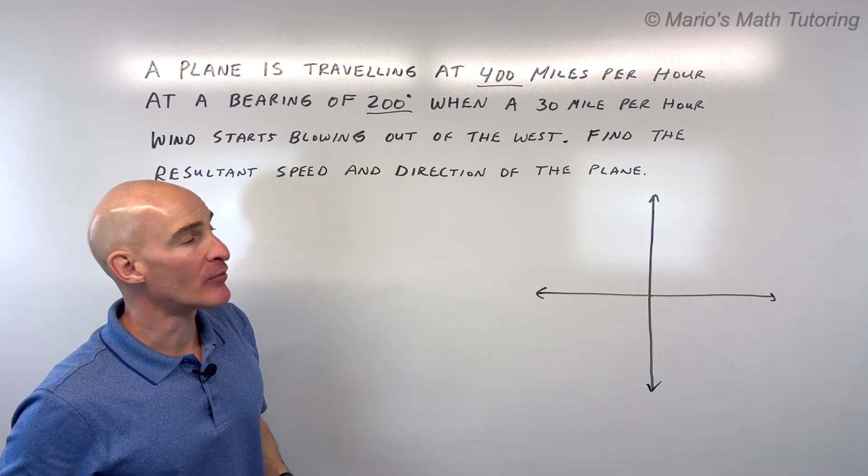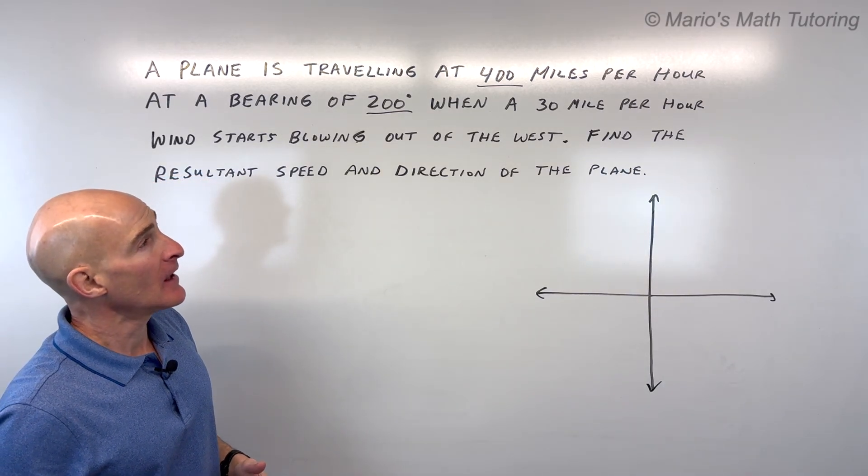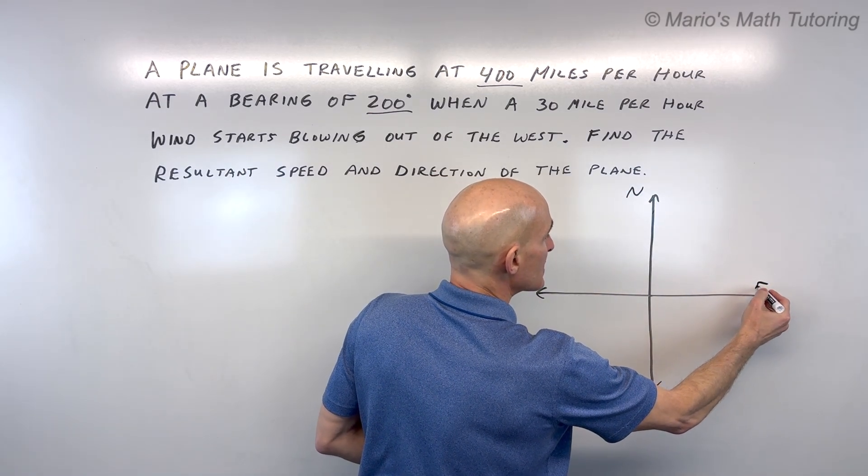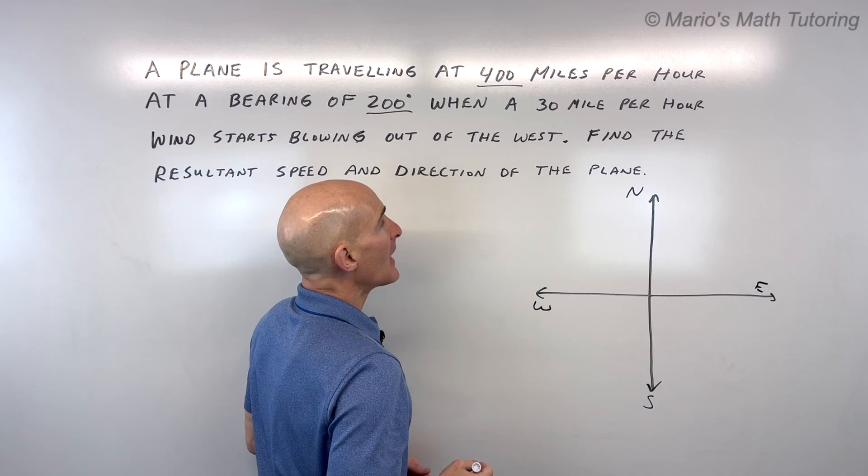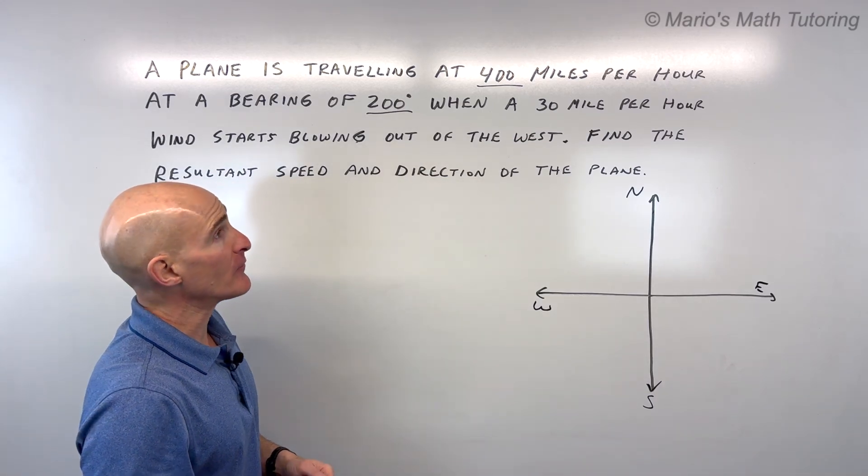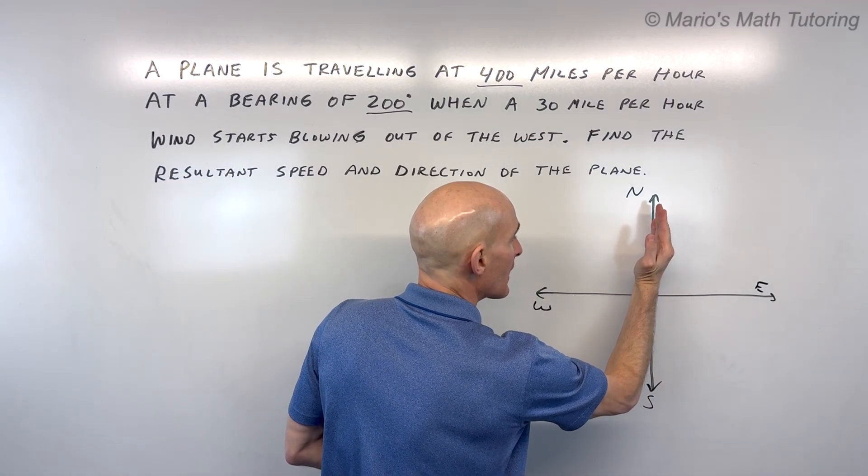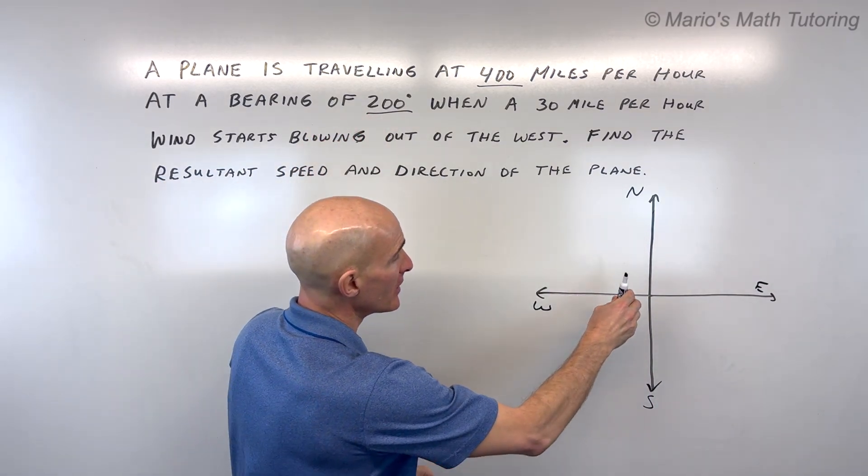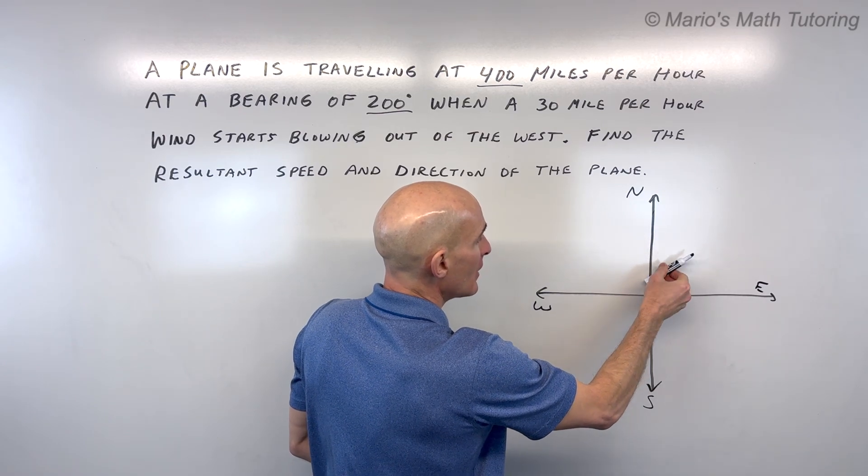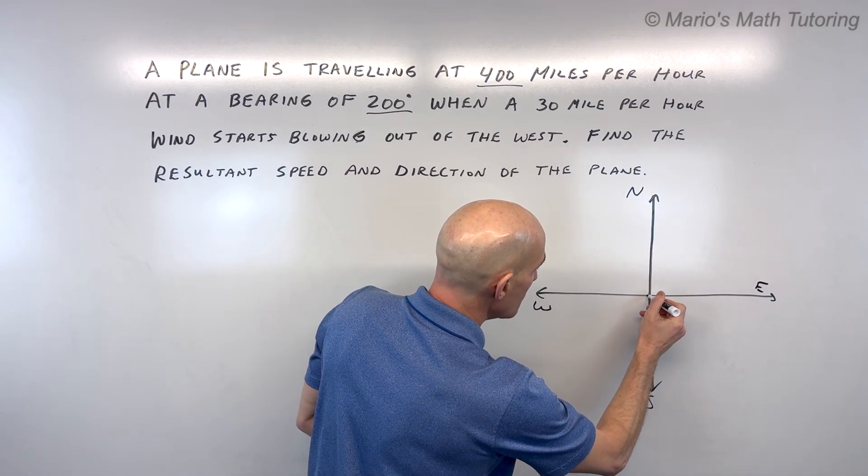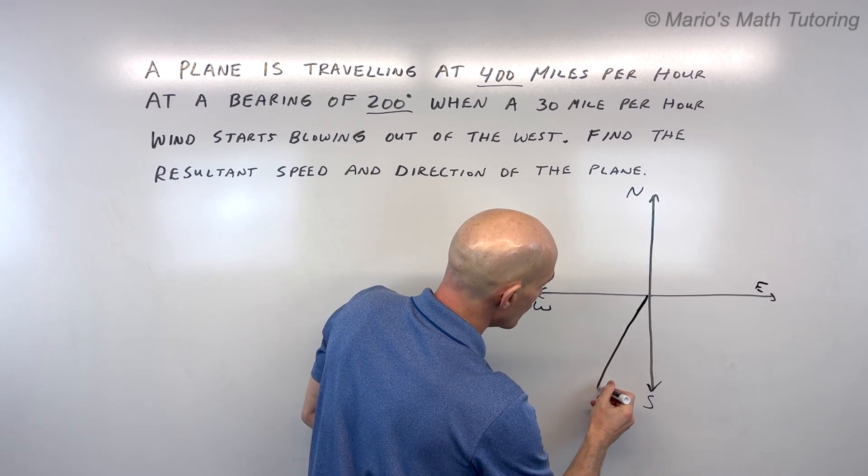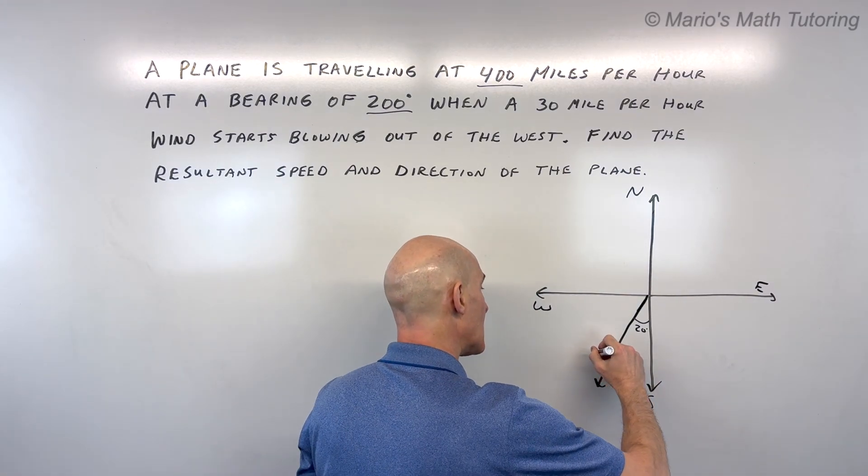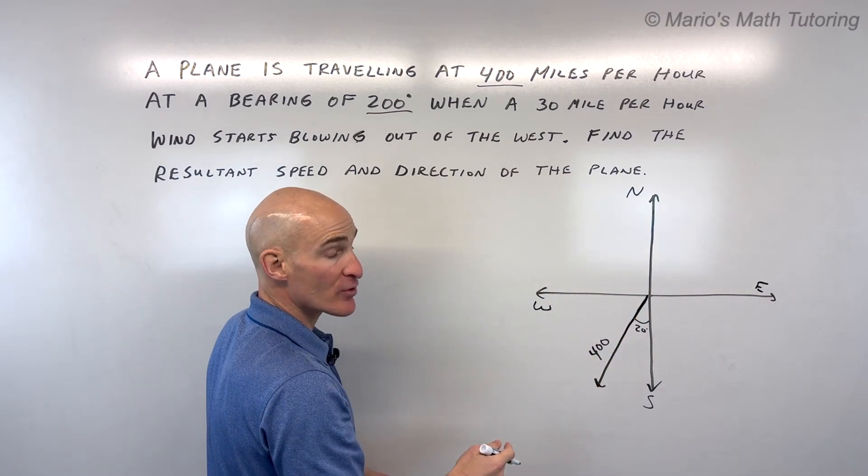So this is a common problem that you see when you're working with vectors. Let's see if we can sketch it out. So the first thing I would do is draw a coordinate axis and I'll label this north, east, south, and west. And when you find the bearing, what you want to do is you want to start facing north and you want to go clockwise, whatever the bearing is. So in this case, a bearing of 200, we'd start here facing north. We'd rotate 90, 180, plus 20 more. So roughly like this. That's 20 degrees. And that's our plane. And it's heading with a speed of 400 miles per hour.